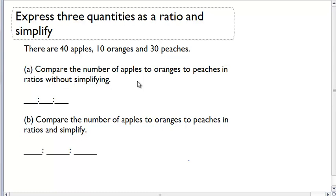Express three quantities as a ratio and simplify. There are 40 apples, 10 oranges, and 30 peaches.